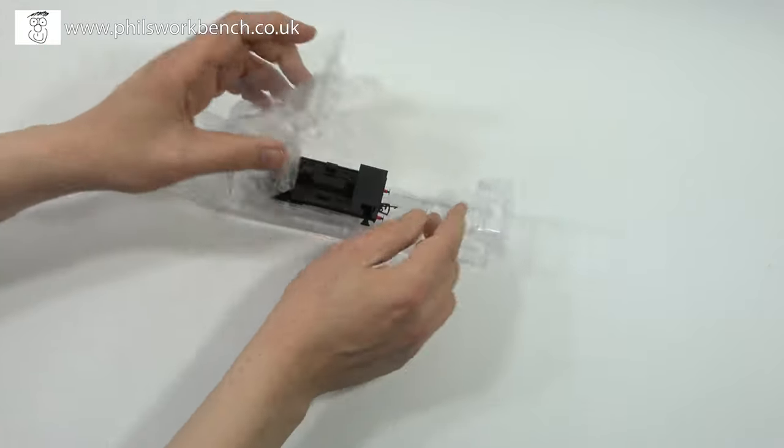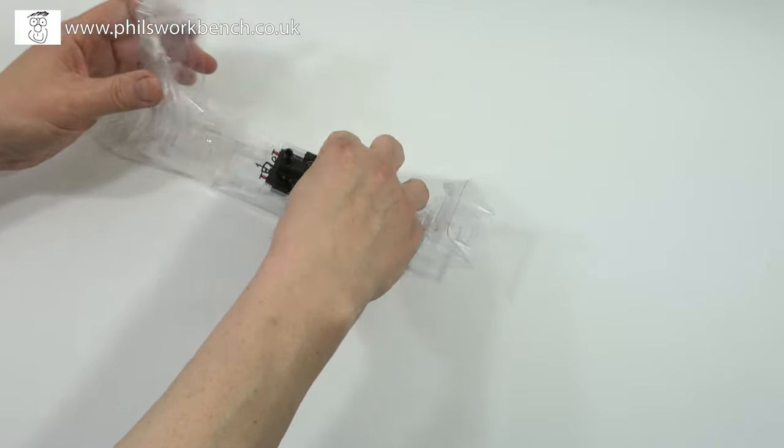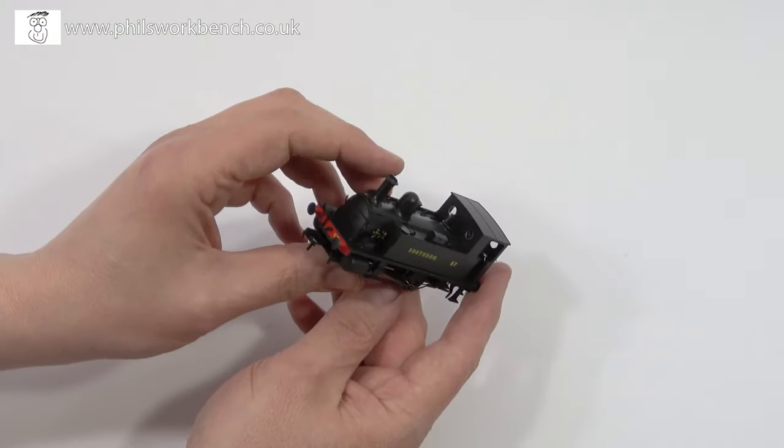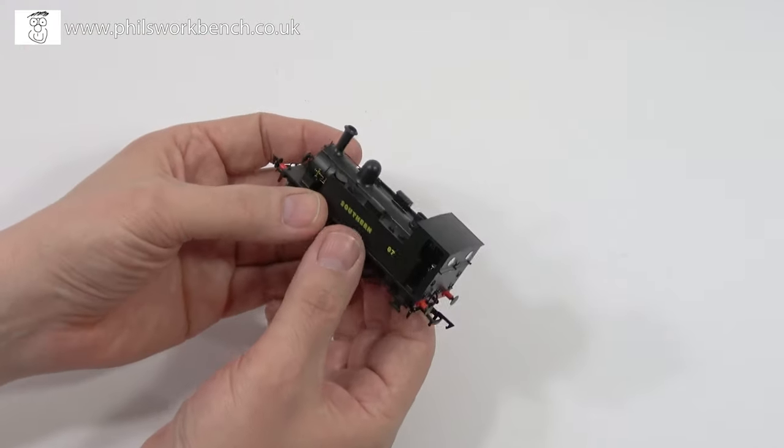Undo that, there's a bit of polythene, and there we have it: a nice shiny new loco.